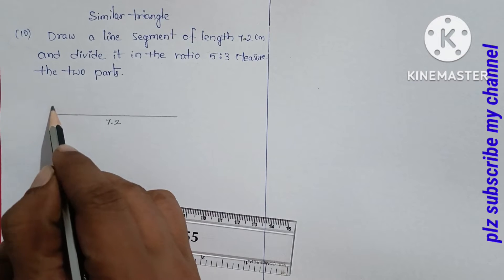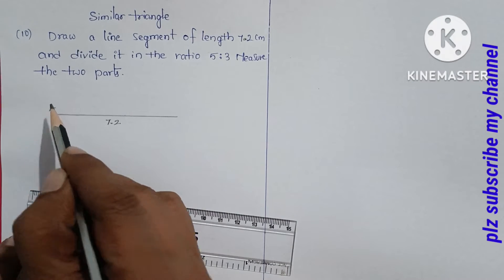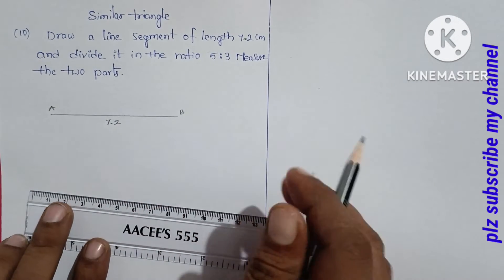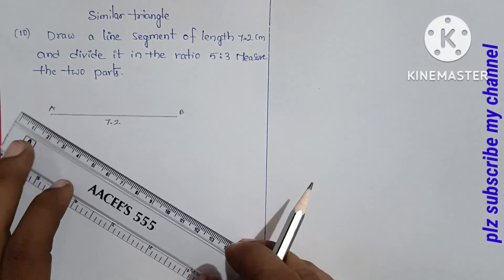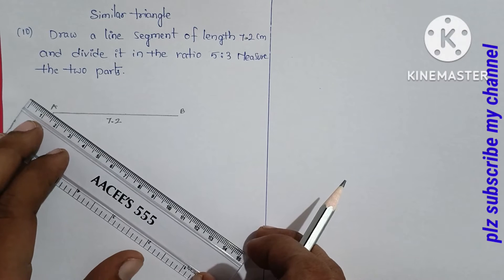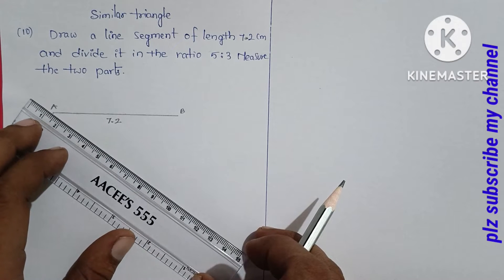Name the endpoints A and B. Now draw an acute angle from point A.